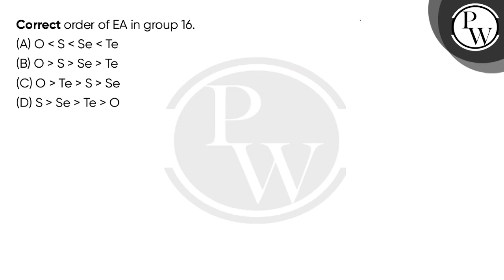So group number 16 elements are oxygen, sulfur, selenium, tellurium, and polonium. Polonium is radioactive. We have to talk about down the group what happens. There's an increase in nuclear charge with the number of shells, increase in the number of shells. So what will dominate? The increase in the nuclear charge or the size of the atom?